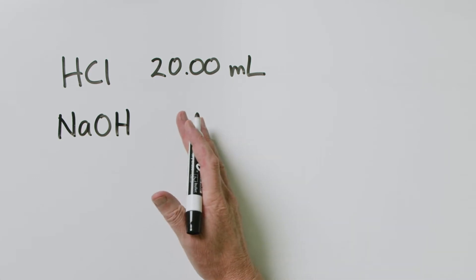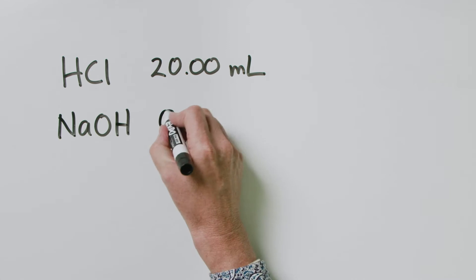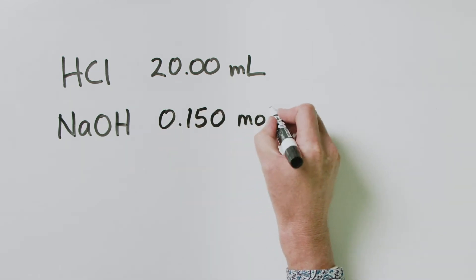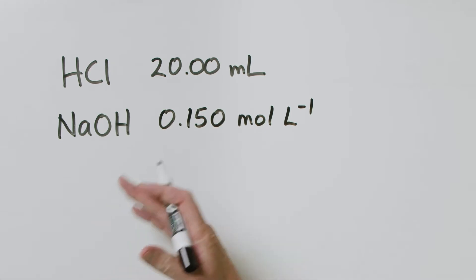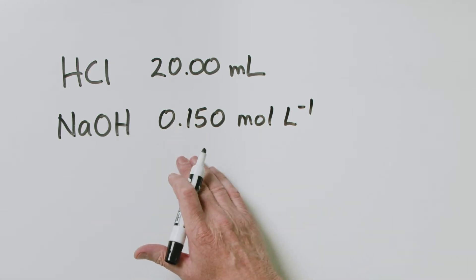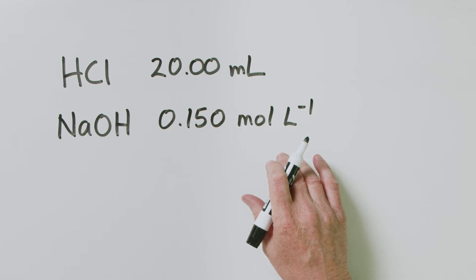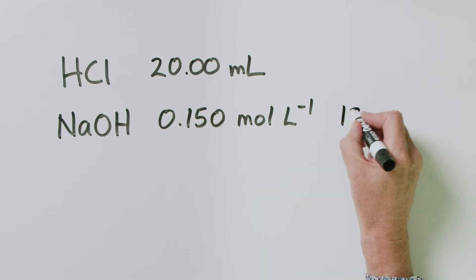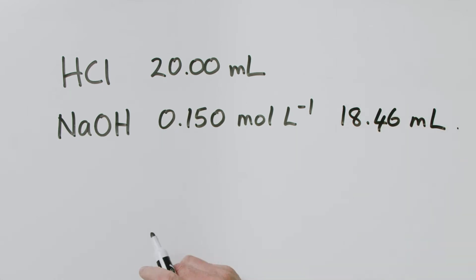Now, the sodium hydroxide that we've got, we do know its concentration. It is 0.150 mol per litre in concentration. And when we do our titration, what we find is that in order to reach what we call the end point of the titration, this required 18.46 mLs of this solution to react completely with that one. So, then the question that we're going to ask, what's the concentration of the HCl?